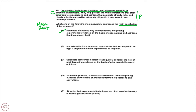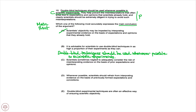Answer choice B: it is advisable for scientists to use double-blind techniques in as high a proportion of their experiments as they can. B is a direct restatement of the first sentence. Notice that 'in as high a proportion of their experiments as they can' maps directly to 'whenever possible' — exact same idea, direct restatement.